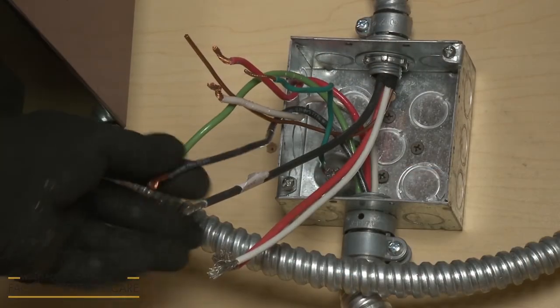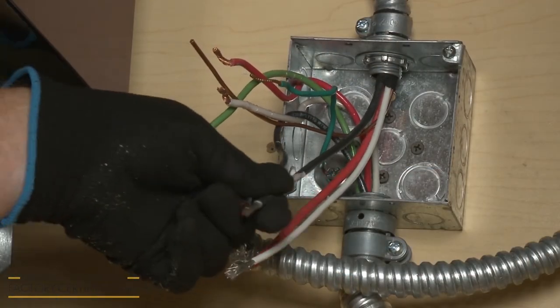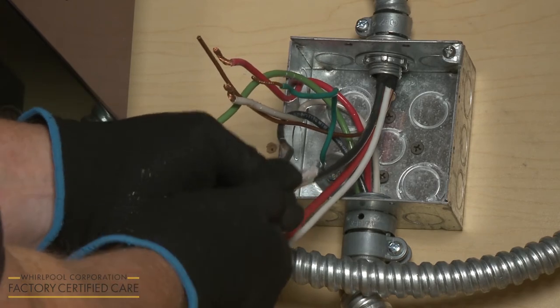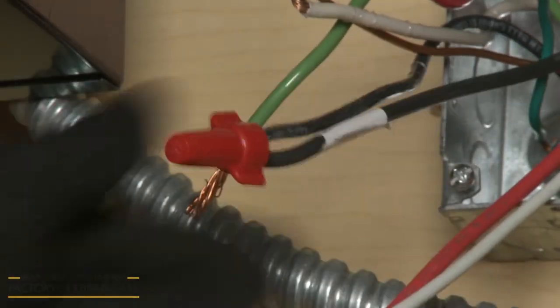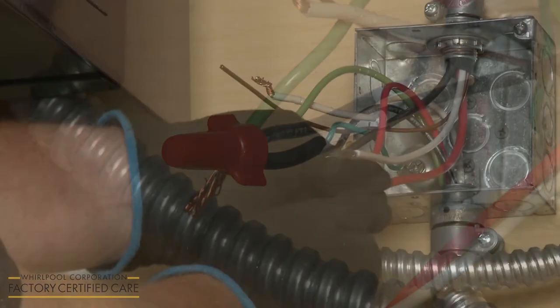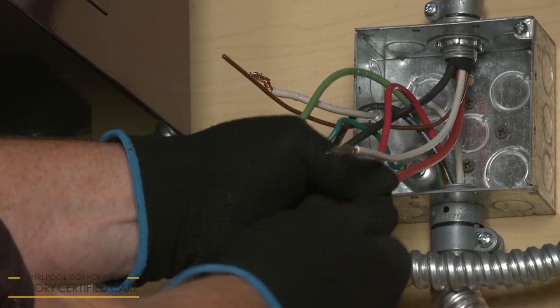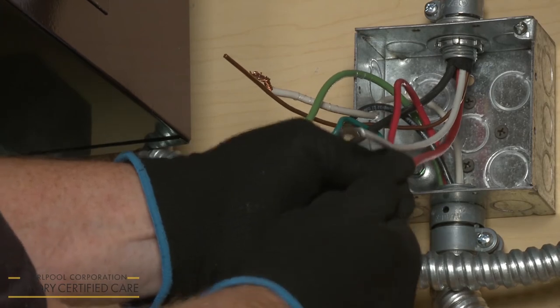Join the black wires together and secure them using an approved UL-listed wire nut. Do the same to secure the two red wires together and the two white wires.